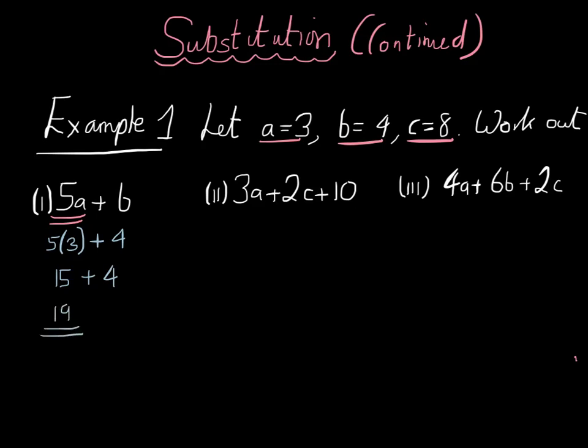Next part, we want to work out 3a plus 2c plus 10. So 3a, substituting in, we have 3 lots of 3, so 3 bracket 3, plus 2 lots of c, which is 2 bracket 8, and then we have plus 10. Let's work out each bit separately. 3 bracket 3 means 3 times 3, which is 9, plus 2 times 8, which is 16, plus 10. If we add these up, 9 and 16 is 25, add 10, is equal to 35.